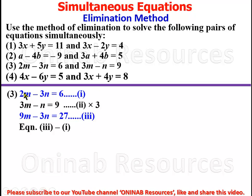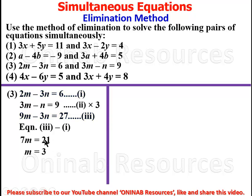So 9m minus 2m gives 7m. Negative 3n minus negative 3n gives 0. And 27 minus 6 gives 21. Dividing both sides by the coefficient of m, which is 7, we have m equal to 3. 21 divided by 7 gives 3. We've gotten the value of m.